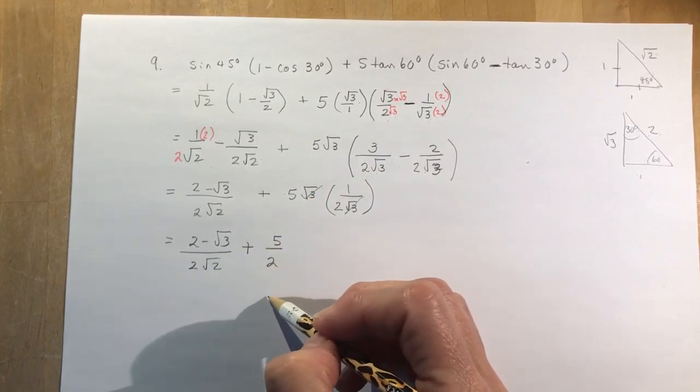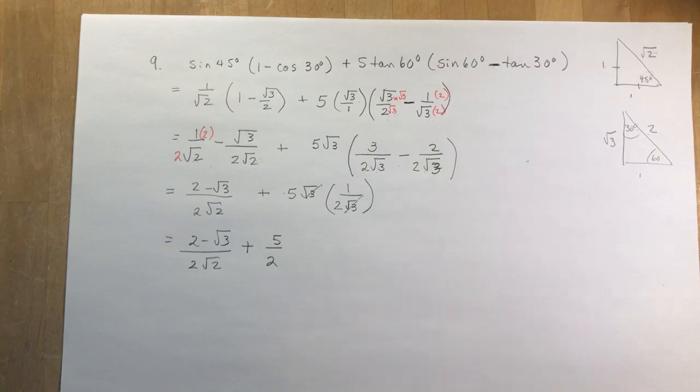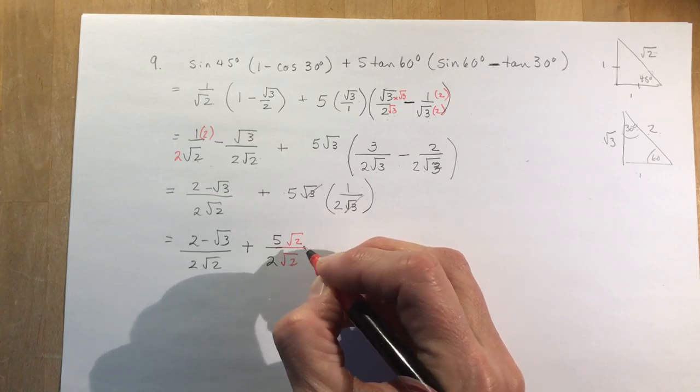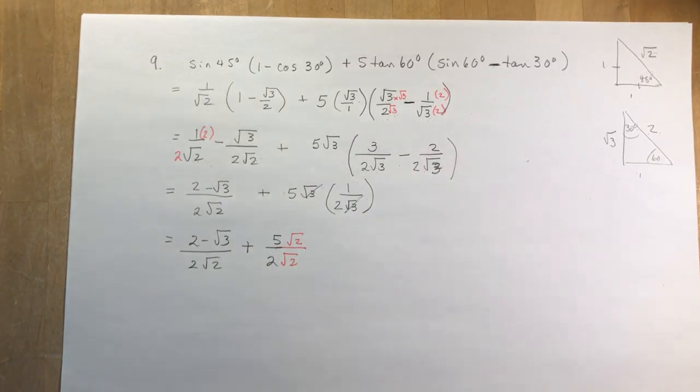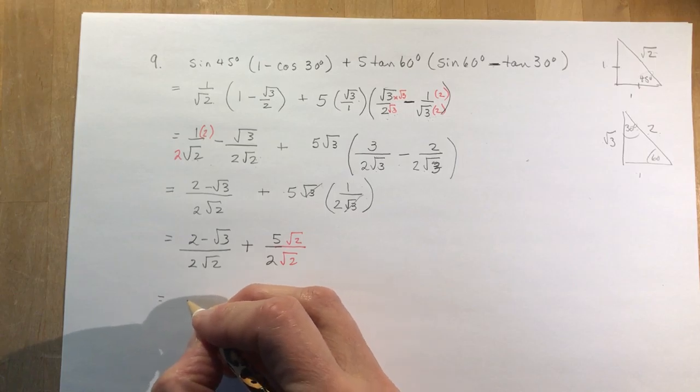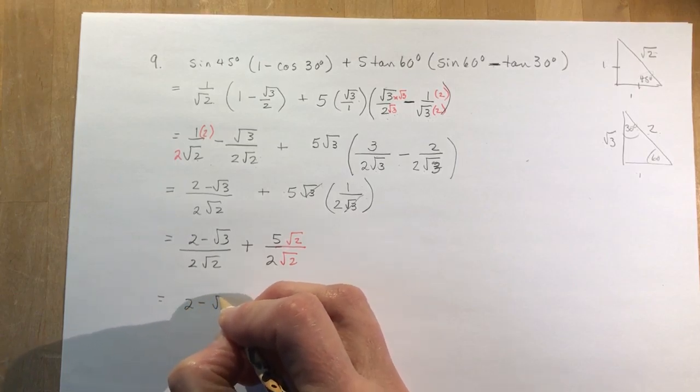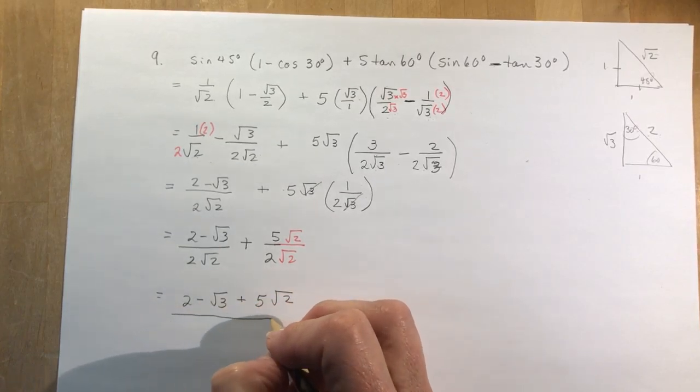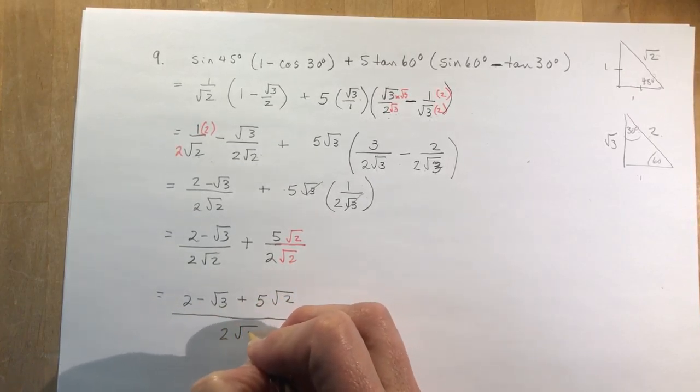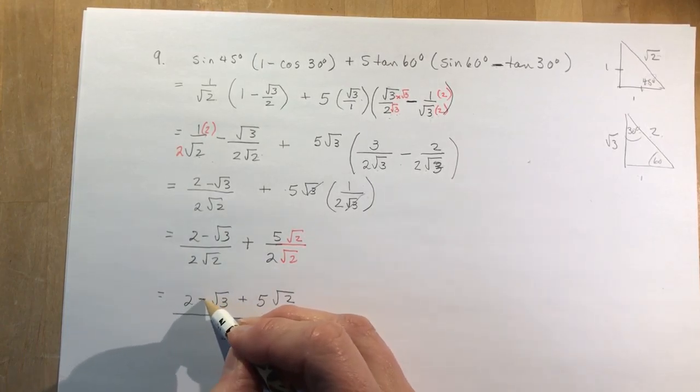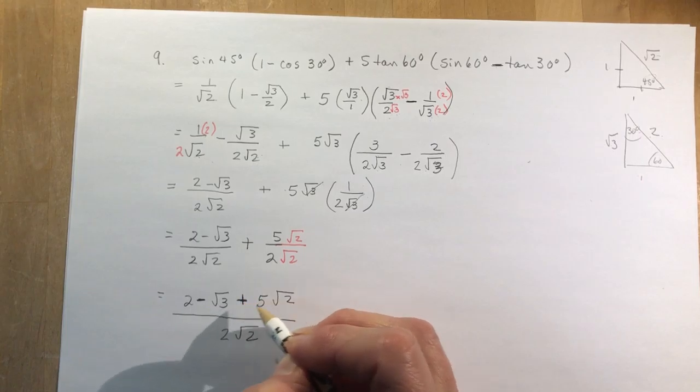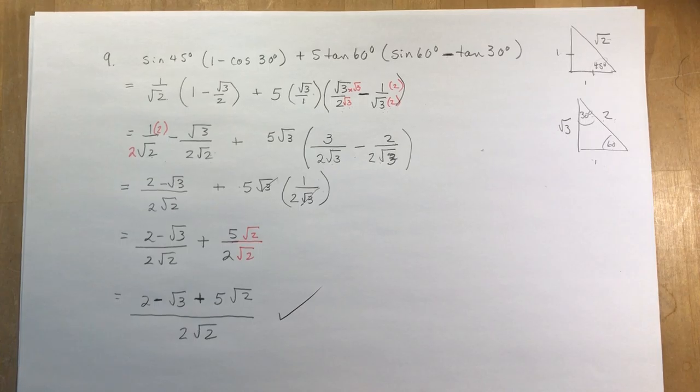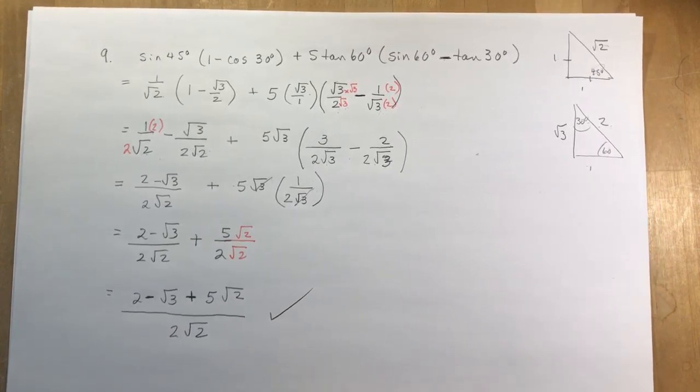So in order to combine these two together now, I need to make a common denominator again over here. So this times root 2, this times root 2, and I'm going to end up with 2 minus root 3 plus 5 root 2 all over 2 root 2. Now make sure you don't try to cancel these out. Remember, you can't cancel anything out unless they're all multiplied together. And that's your final answer, and that would have been the correct solution. I'm sorry, but thank you very much to Matthew for pointing that out to me.